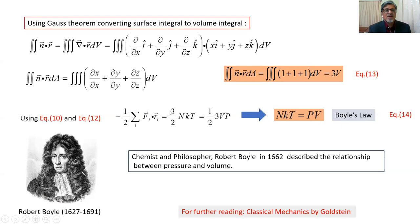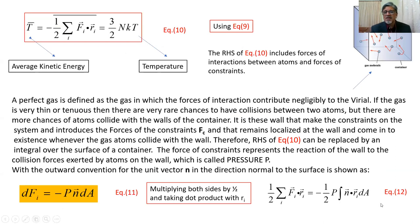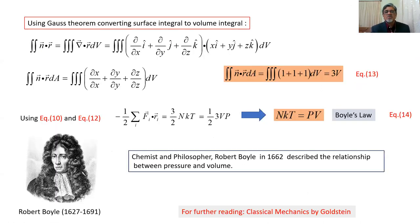Using this result, minus one-half summation Fi dot Ri equals three-halves NkT, which also equals one-half times 3PV, giving three-halves PV. Simplifying, NkT equals PV. This is Boyle's law.